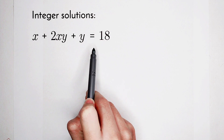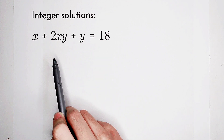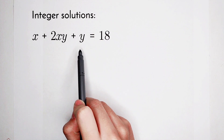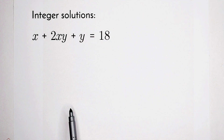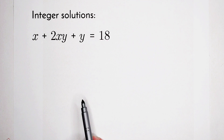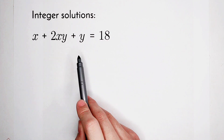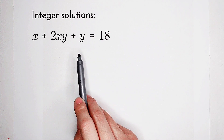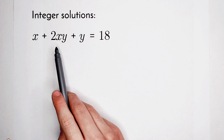Observation. The right-hand side is 18, and on the left we have x, 2xy, and y. We have a clue. For this form, maybe we can factorize the left-hand side. Consider the coefficients: 1, 2, 1. Here appears an x, and here as well.